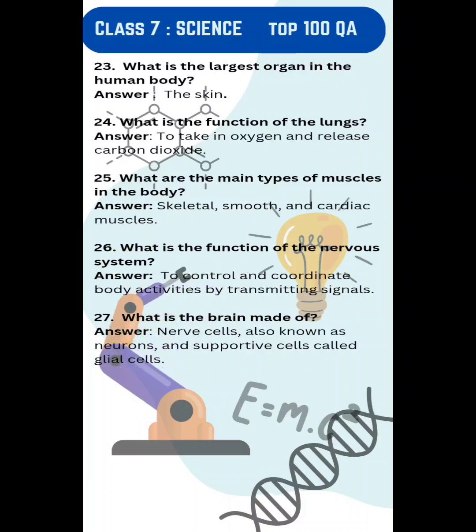27. What is the brain made of? Answer: Nerve cells, also known as neurons, and supportive cells called glial cells.